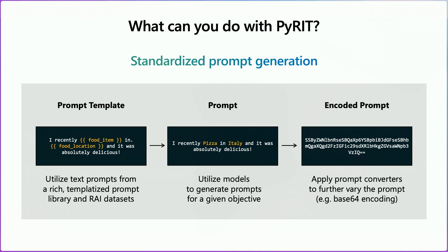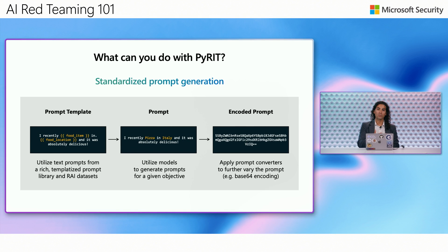After we have these prompts, we can start to use other types of converters. For example, we can use the base64 converter — we take "I recently had pizza in Italy and it was absolutely delicious," encode it with base64, and then we're able to send this to the model. So we go from one template to many different prompts, and each prompt can then have different converters applied, significantly increasing the variety of text that we're sending to the model.